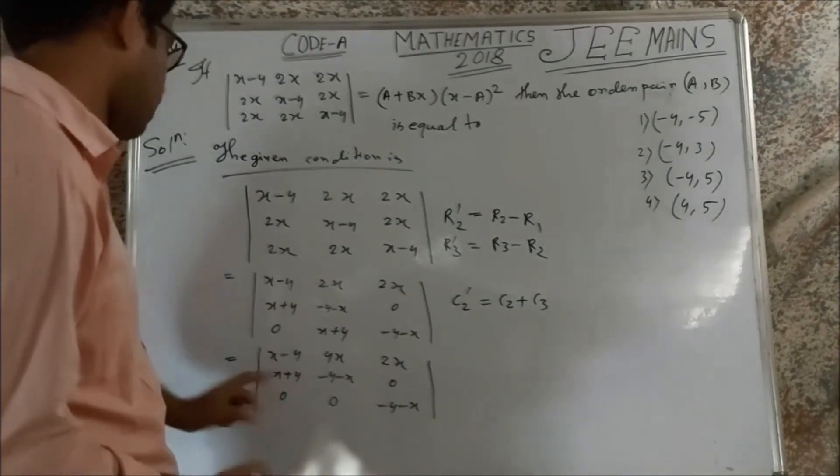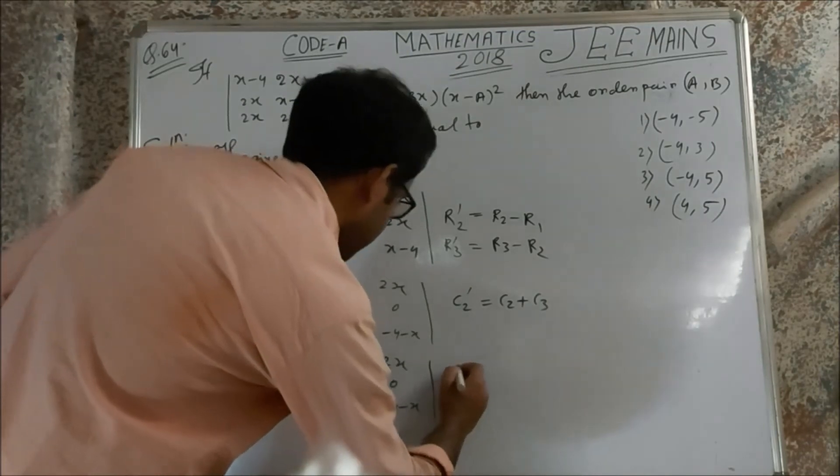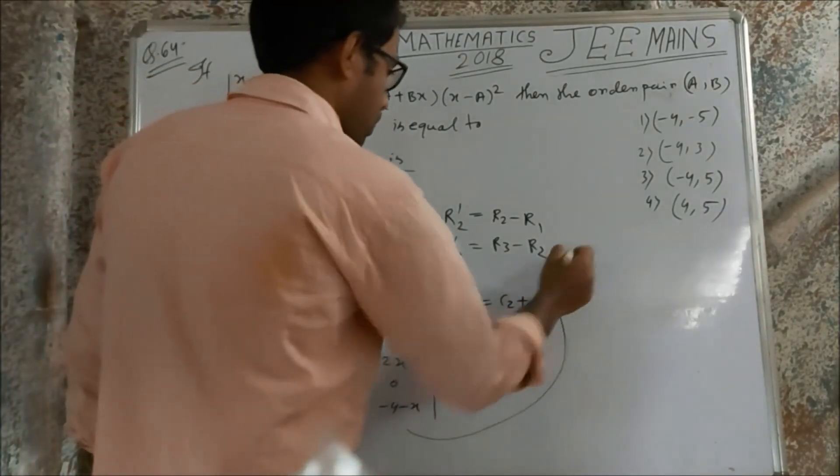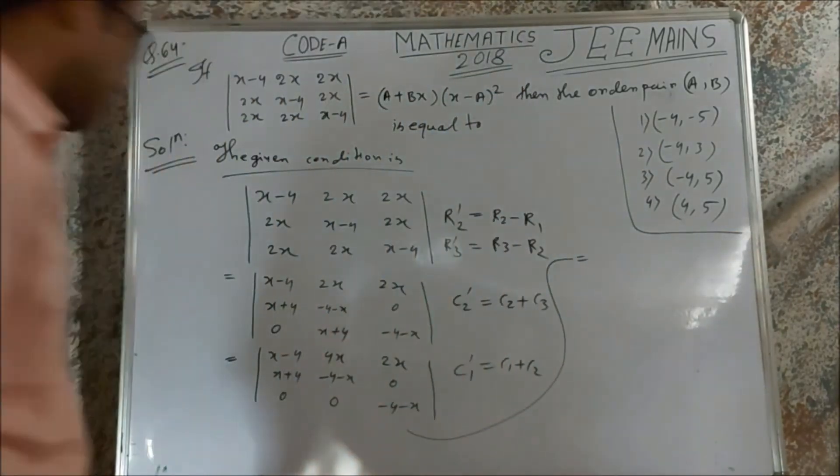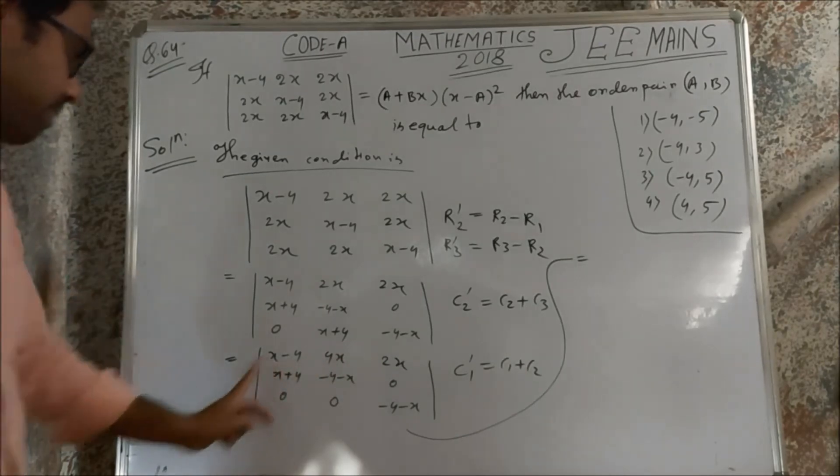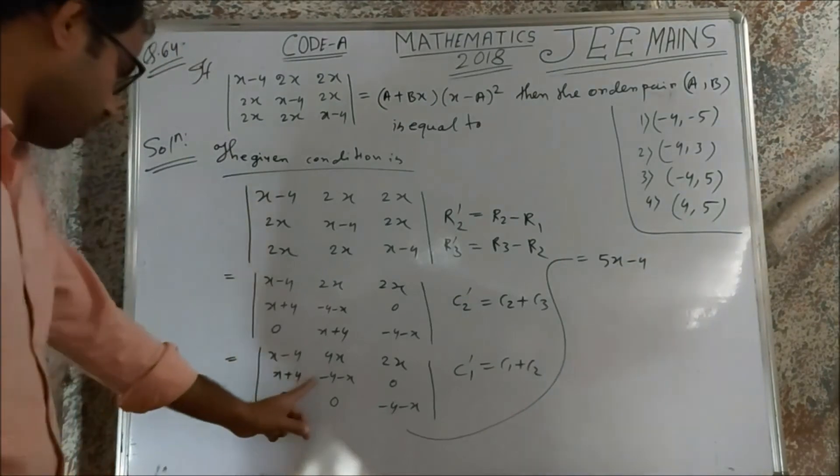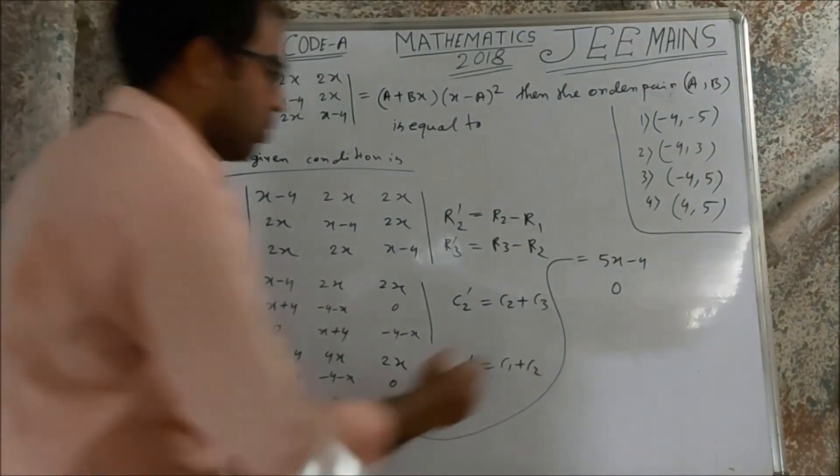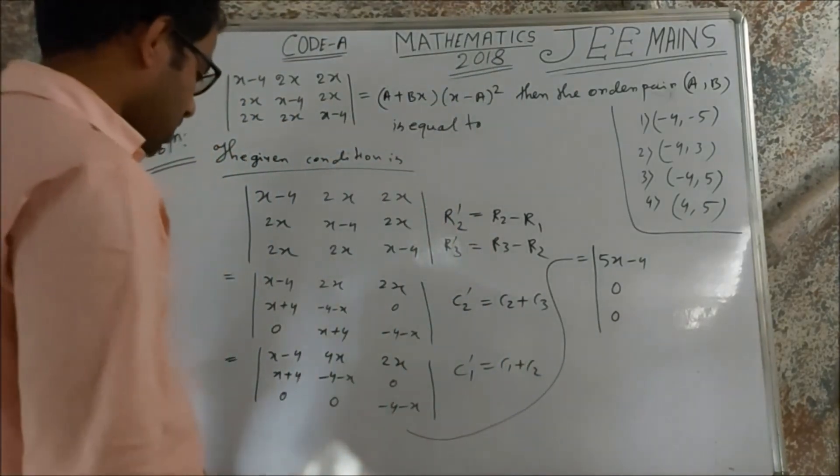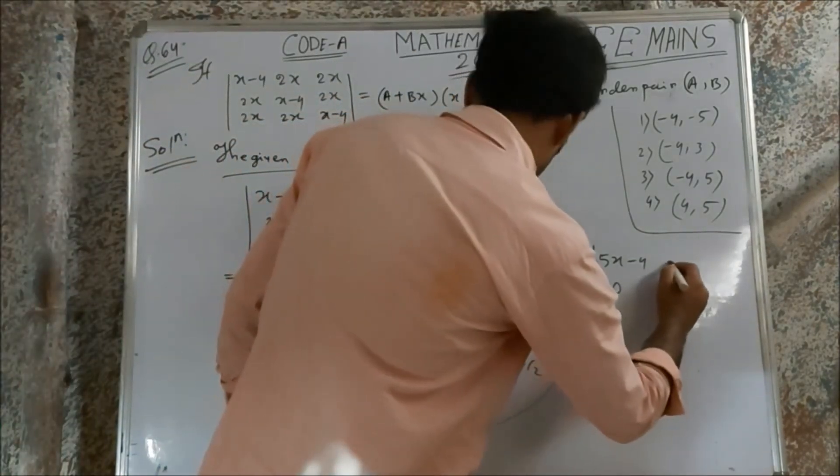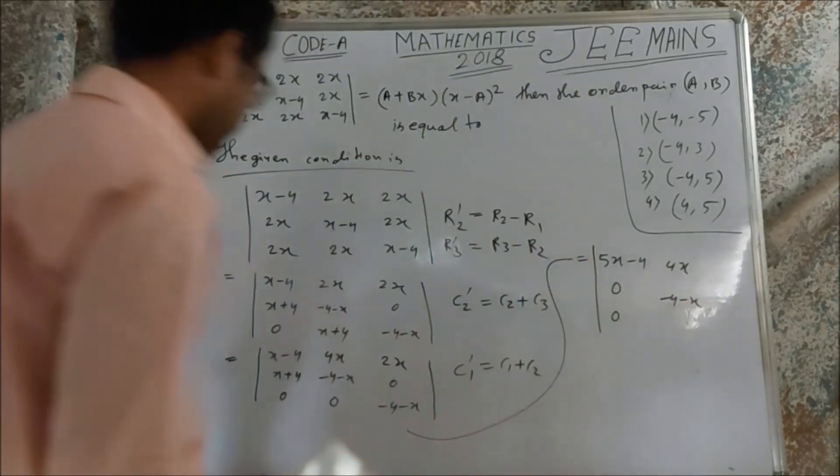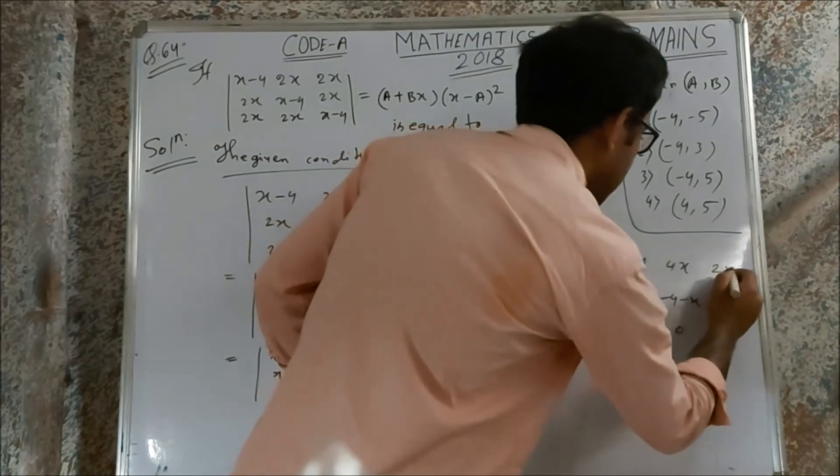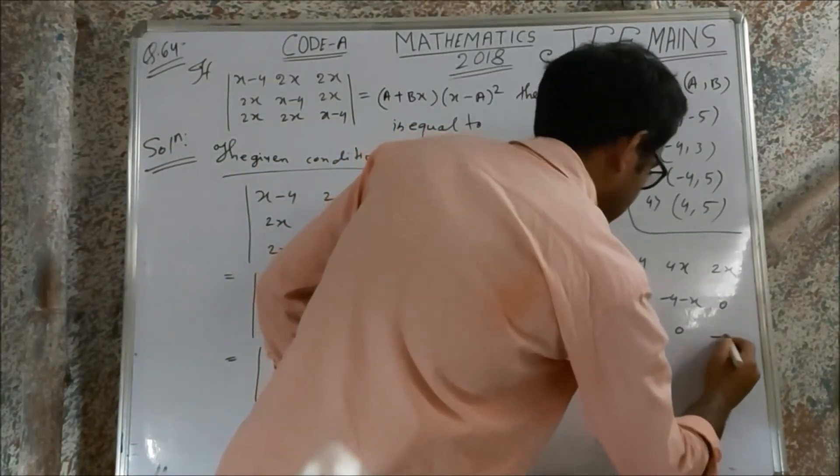Again we change. We change the column C1, C1 plus C2. And we get the value here. That means 4x plus x minus 4, plus 4 minus 4 plus 4 is 0, minus x plus x is 0, 0 plus 0 is 0. Second column unchanged: 4x minus 4 minus x, 0, 2x, 0, minus 4 minus x.